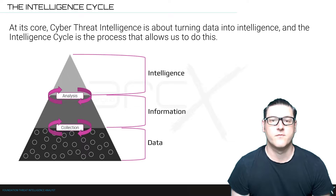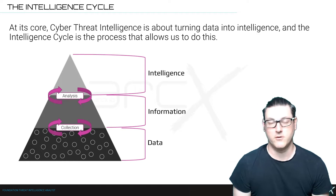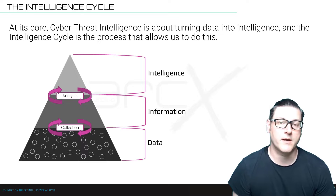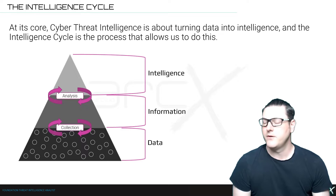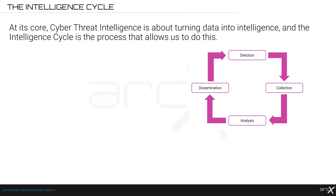We've already come across this idea of a lot of data being turned into a small amount of information, and then a lot of information being turned into an even smaller amount of intelligence. Collection and analysis — those two processes — are extracted from a much larger process, which is the intelligence cycle. It's four steps, and that's what we're going to be looking at.